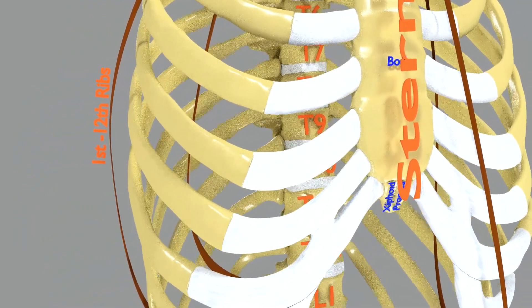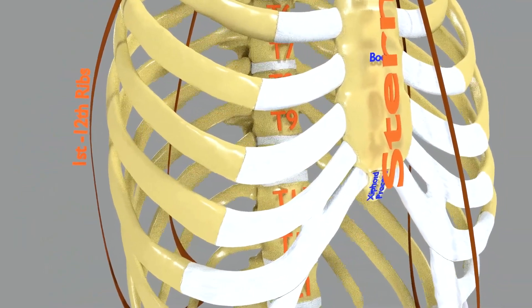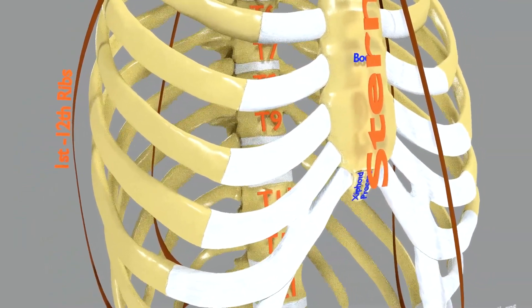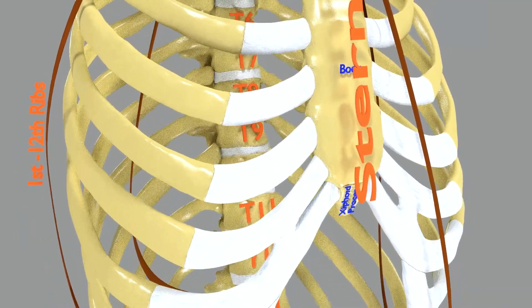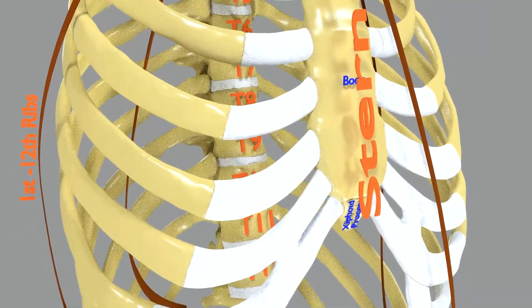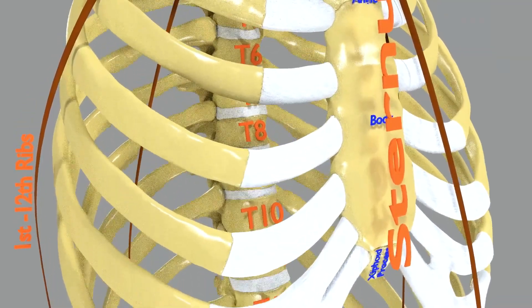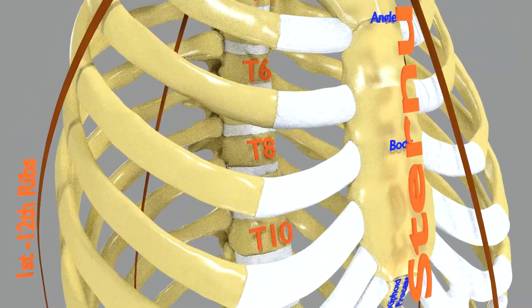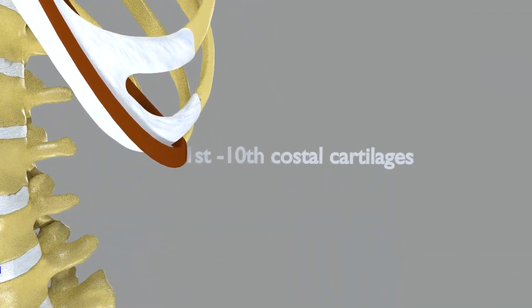The head of the rib lies next to a vertebra. The ribs connect to the vertebra with two costovertebral joints — one on the head and one on the neck.